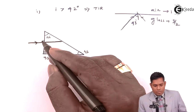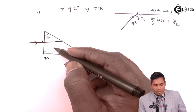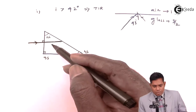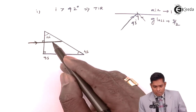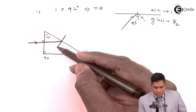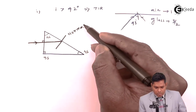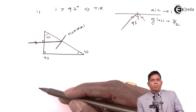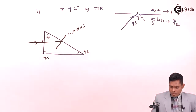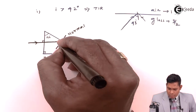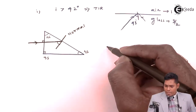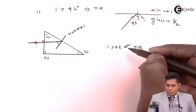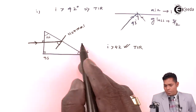At the hypotenuse surface, the normal is drawn and this becomes an oblique incidence. Here the angle of incidence must be checked against the critical angle of 42 degrees. If the angle is greater than 42 degrees, then TIR occurs and the ray is reflected back; otherwise it will emerge out.